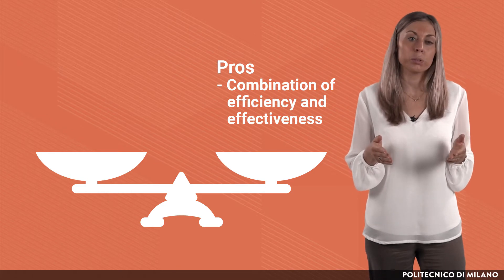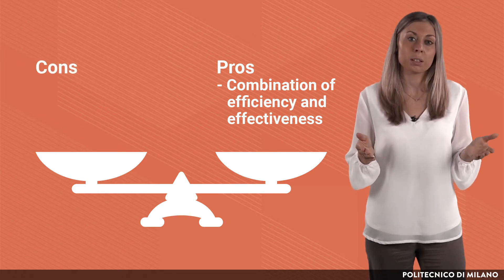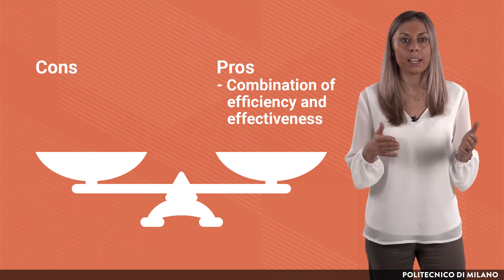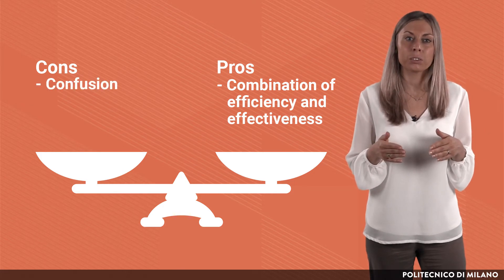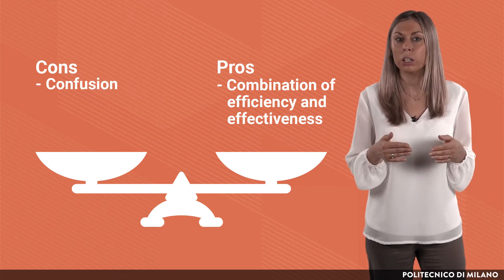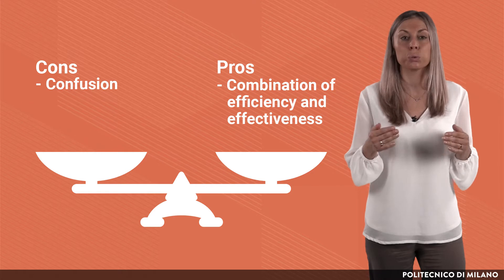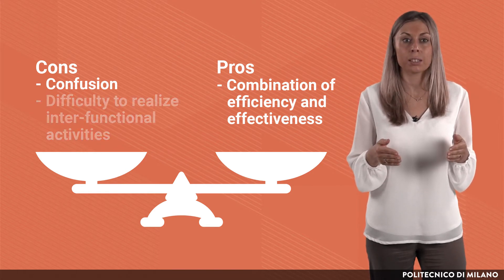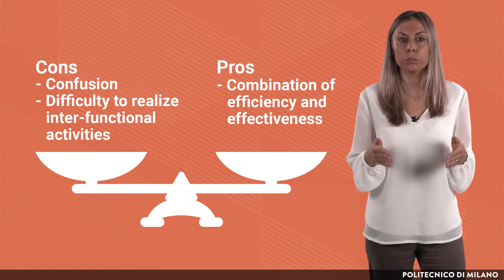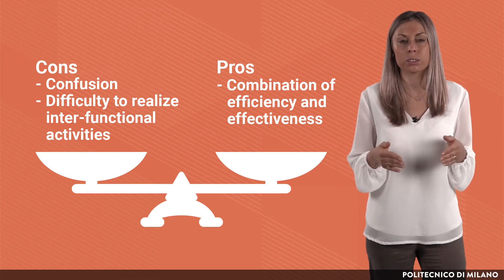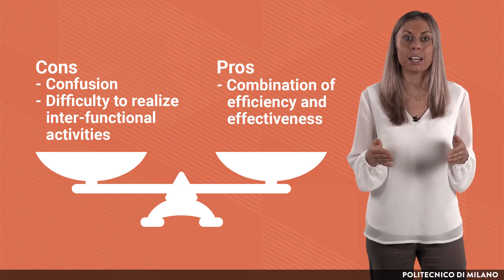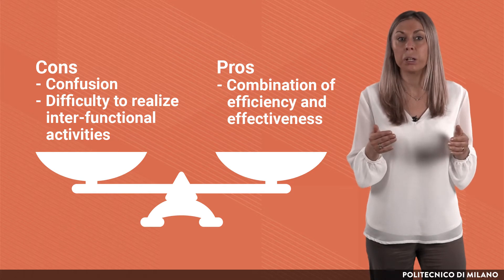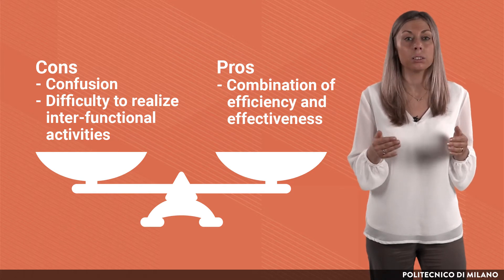But this configuration as well has some cons. The mix between functional and divisional criteria might create confusion about the grouping logic used to design the organization. This confusion makes it much more difficult to pursue inter-functional projects, because people might have a totally different way to operate and to be evaluated in their performance.